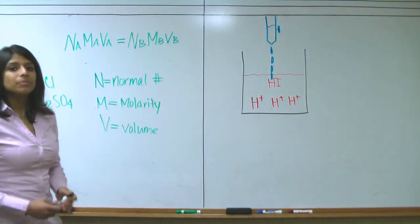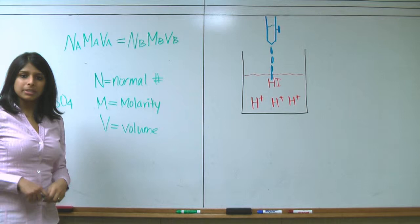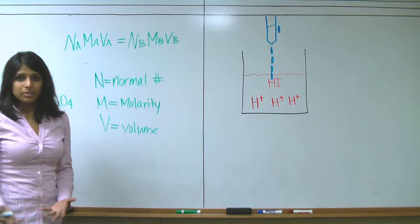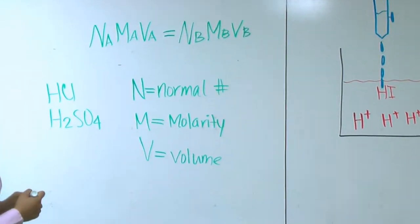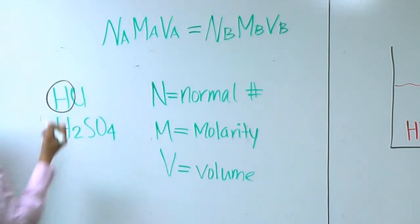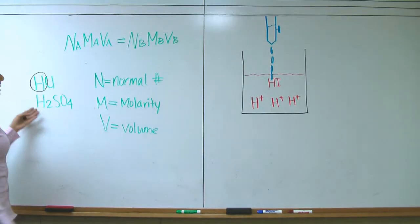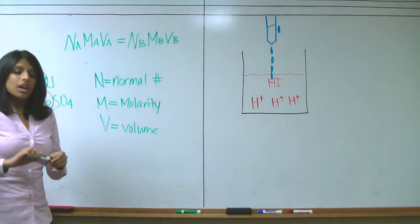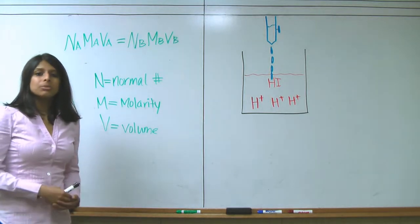The normal number is just the number of reactive species in the acid or base. In an acid, for example, like HCl, our reactive species is H+. So here our normal number would just be 1. In an acid like H2SO4, our normal number would be 2 because we have 2 reactive species. For a base, our reactive species would be OH-.